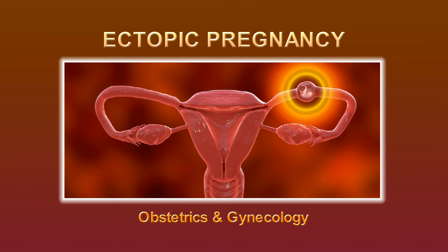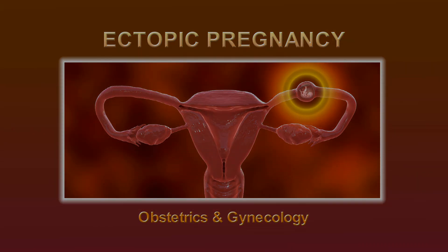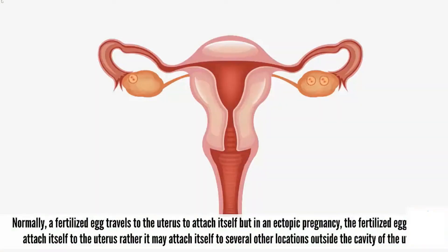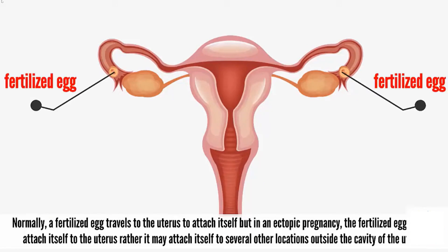Hi friends, today's topic is ectopic pregnancy. Ectopic pregnancy is a complication of pregnancy in which a fertilized egg settles and grows outside the inner lining of the uterus. Normally a fertilized egg travels to the uterus to attach itself, but in an ectopic pregnancy the fertilized egg does not attach itself to the uterus.